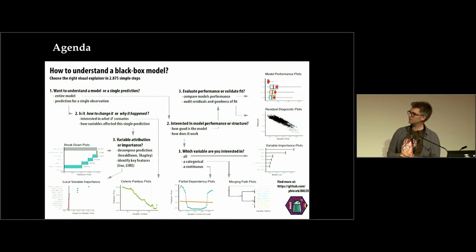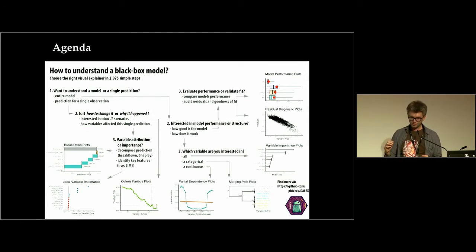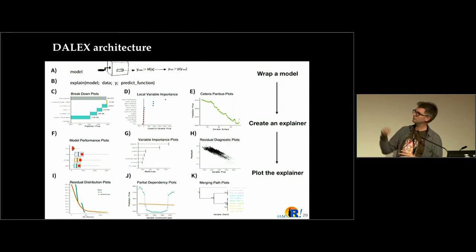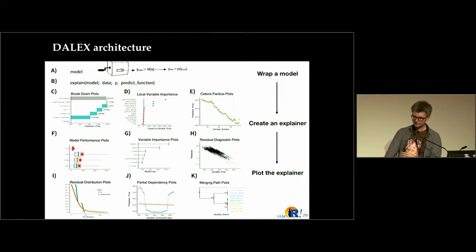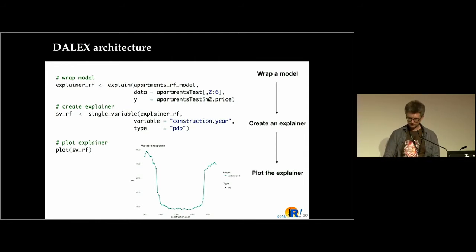There are more explainers. There is an easy map to find the right explainer — on average just 2.87 questions need to be answered to choose the right one. You can Google this map; we have many explainers not related only to LIME. The usage is very simple: just three steps — wrap a model, create explainer, plot explainer. You just need to change the name of a variable in the second step.